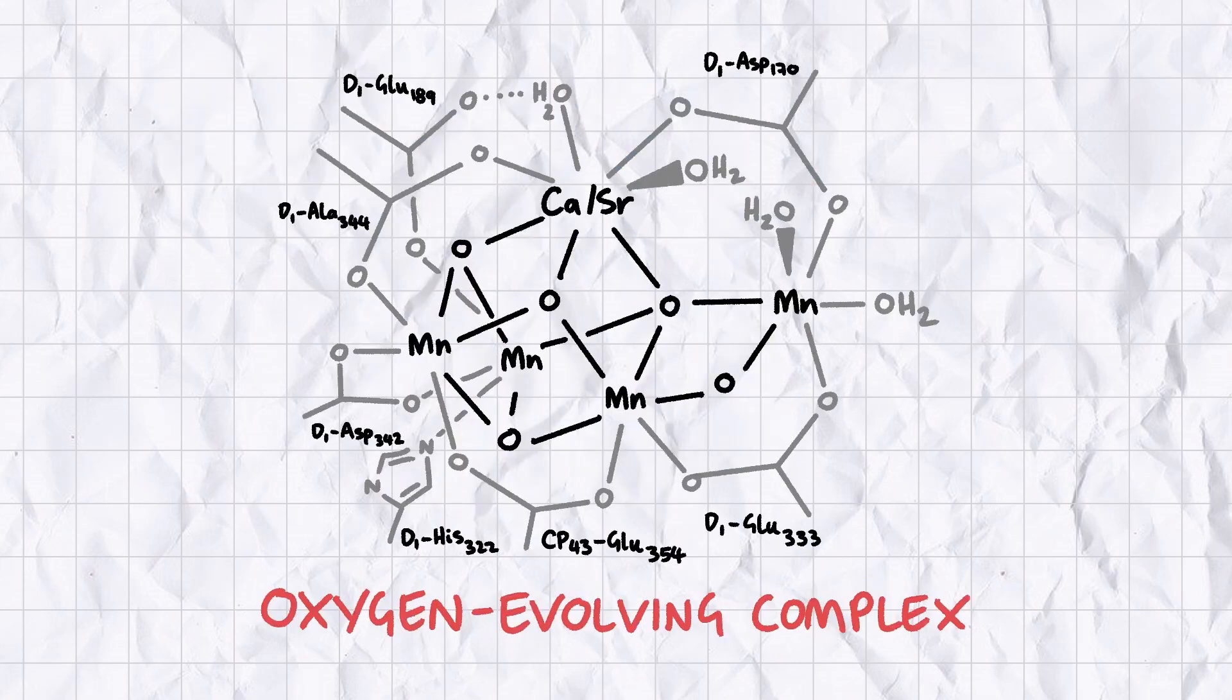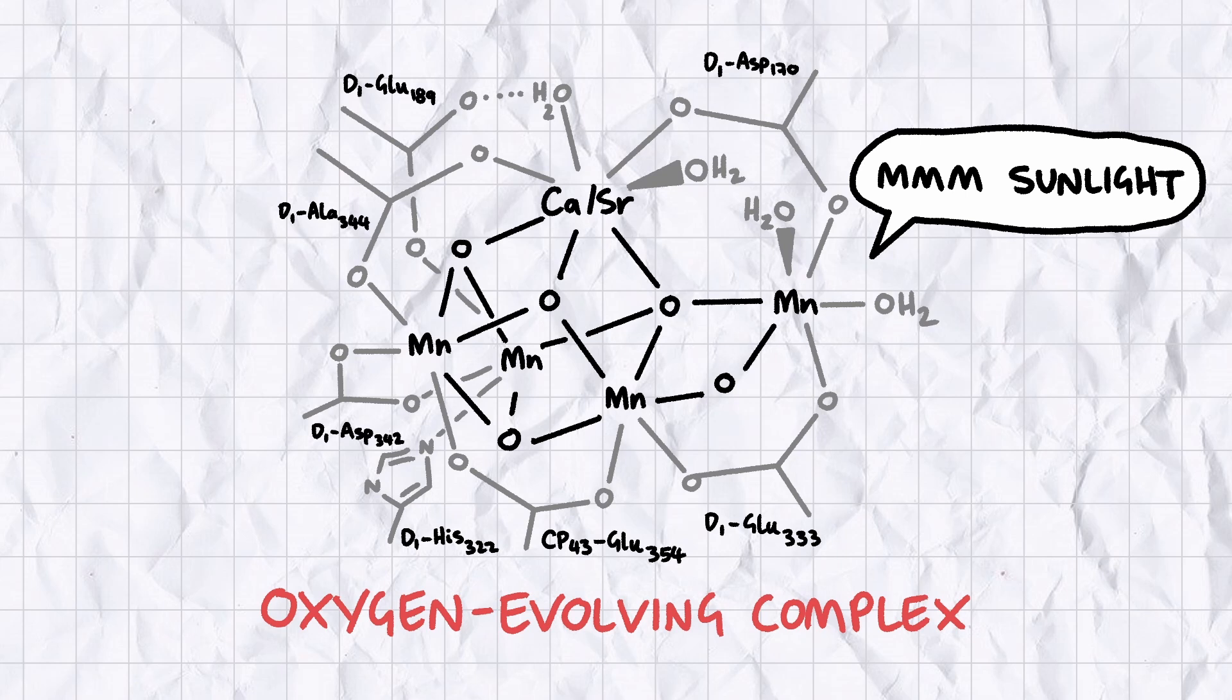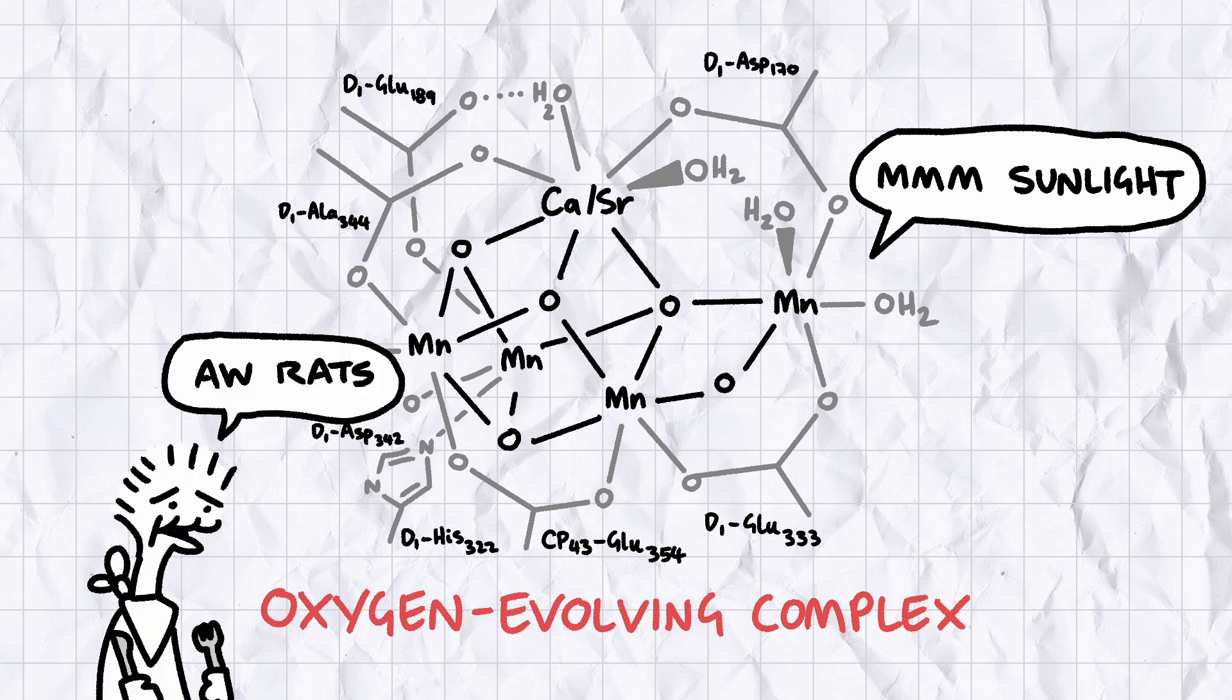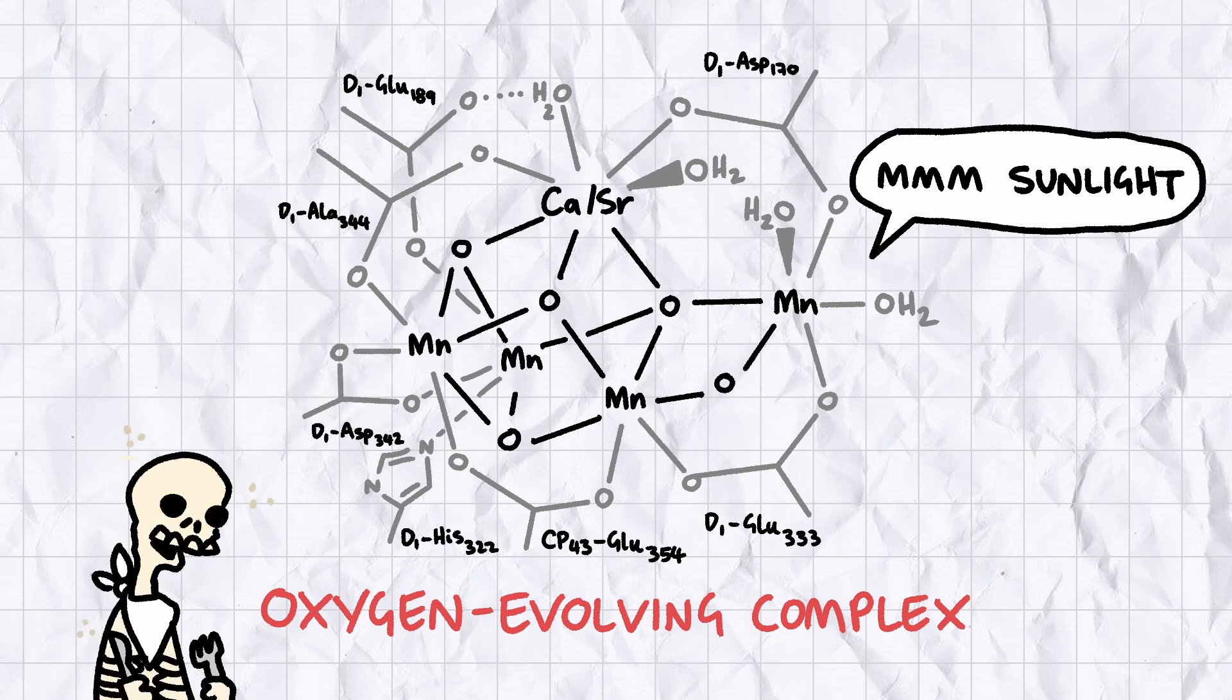The oxygen-evolving complex is a manganese and calcium enzyme that makes photosynthesis possible in plants. Manganese is an essential mineral in both humans and plants, but unfortunately people can't use it to turn sunlight into Findus Crispy Pancakes. However, if our current understanding of its biochemical properties is well-founded, we can use it to make nice healthy bones.